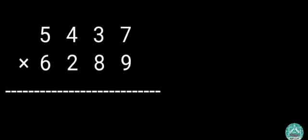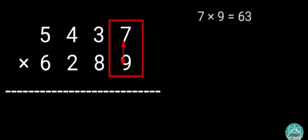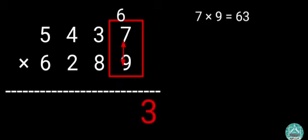Multiply 5,437 by 6,289. Step 1: Multiply 7 by 9. 7 times 9 equals 63. Write 3 in the 1's column and carry forward 6.